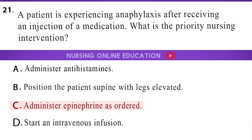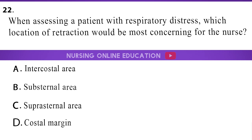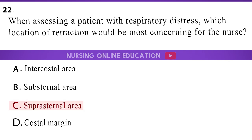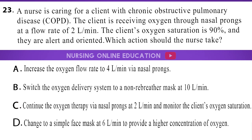When assessing a patient with respiratory distress, which location of retraction would be most concerning for the nurse? A. Intercostal area. B. Substernal area. C. Suprasternal area. D. Costal margin. The answer is option C: Suprasternal area.